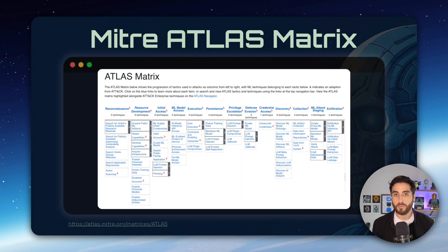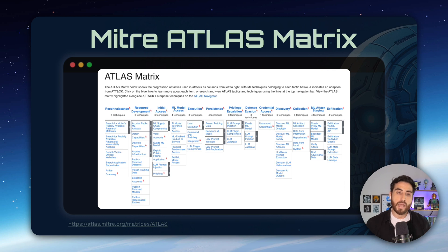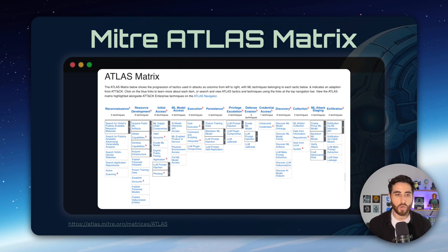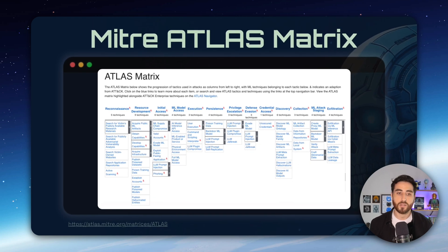The second framework I want to discuss is the MITRE ATLAS matrix. If you are familiar with the ATT&CK matrix, which is used to classify TTPs — tactics, techniques, and procedures — used by threat actors in your information system, the ATLAS matrix is similar, except it is really focused on AI systems, machine learning, and LLMs. It has similar tactics such as reconnaissance, resource development, initial access, and so on, and for each tactic, you have the different techniques that could be used.